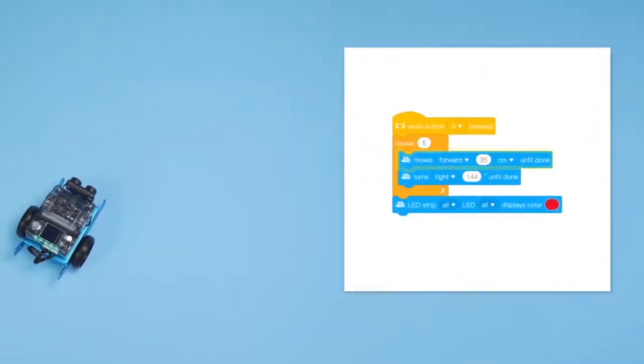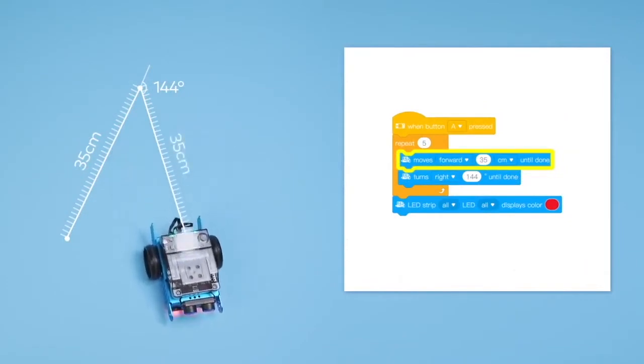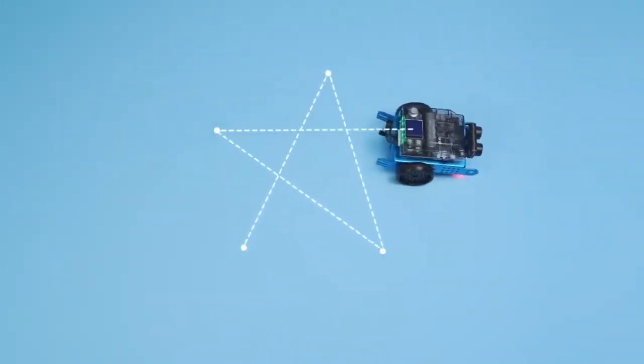Thanks to its encoder motors, students can control the rotation, speed and positions of M-Bot Neo with greater precision. It allows for more realistic and accurate robotics lessons.